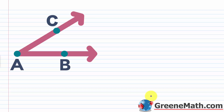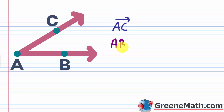Looking at our example, we have ray AC and ray AB — these are the sides of the angle. A is the common endpoint, so A is the vertex.